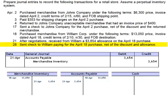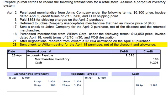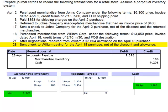April 28th: sent a check to William Corp paying for the April 18th purchase, netted the discount and the allowance. We're making payment on the 10th day to receive the 2% discount. The balance due was $9,396; multiplied by 2%, that reduces the inventory value by $188. We write a check for 98%, which is $9,208. The balance in merchandise inventory from this transaction increases by $9,208, accounts payable has a balance of zero, and the total paid in cash was $9,208. The balance in the inventory account should equal the amount ultimately paid for the asset — a great way to check your work.